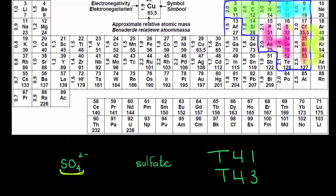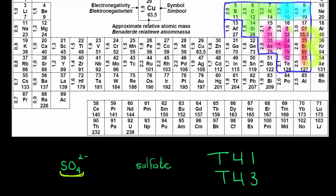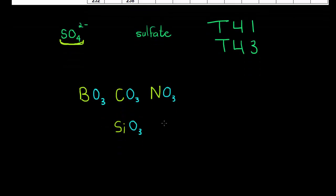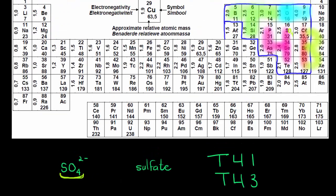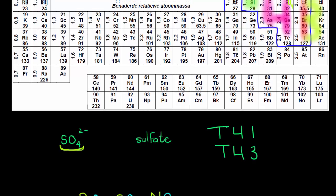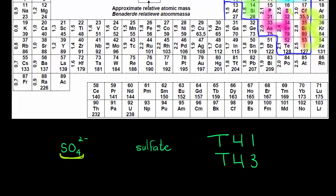The 4 represents each of these elements compounding with four oxygens. Don't worry too much about arsenic, selenium, and tellurium — they're seldom used, but I'll include them for illustration. The 4 is made up of phosphorus, sulfur, arsenic, selenium, and tellurium, each combining with four oxygens.